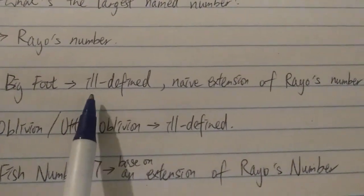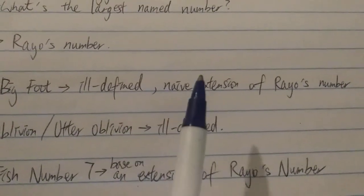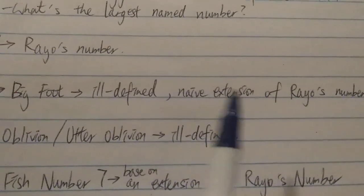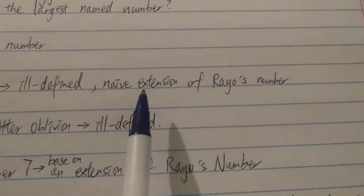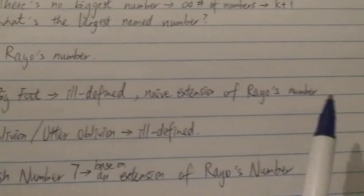However, later it's found out to be ill-defined, which means it's not very well-defined. It's kind of vague. And it's actually found out to be a naive extension of Rayo's number.